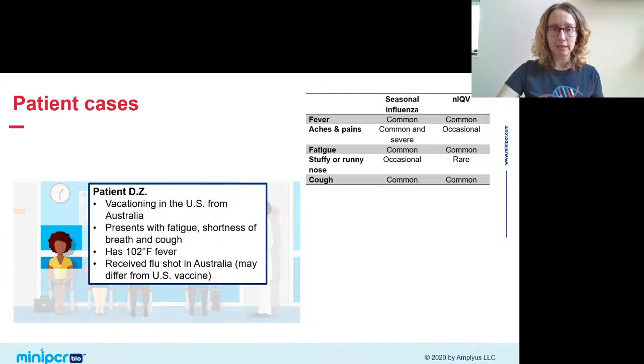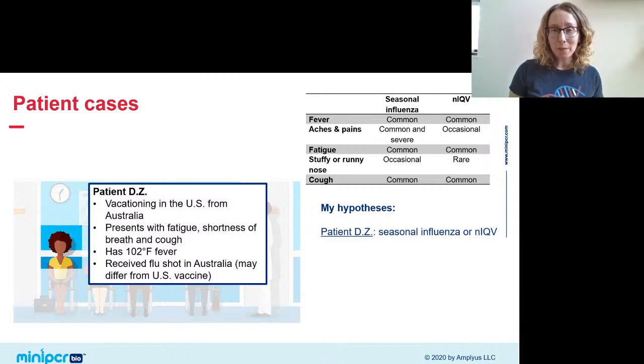So our first patient today, patient DZ, she's a traveler. She's in the U.S. with her family on vacation from Australia. Shortly after she arrived in our country, she came down with fatigue, shortness of breath, and a cough. When she showed up in your clinic today, she's running a fever. She has 102 degree fever. And so she is showing all the symptoms that are common to both seasonal flu and NIC-V. Now, she did receive a seasonal flu shot, but she received it in Australia. And the formulation of the flu shot is slightly different there than in North America. So it wouldn't necessarily provide her coverage if she were to encounter a seasonal flu strain in the U.S. And so because her case is so ambiguous, I'm starting to develop a hypothesis about what she might have, but I really couldn't narrow it down other than she might have seasonal flu or NIC-V. It's just too hard to tell. I need more information. I need the certainty that comes with doing a molecular test.